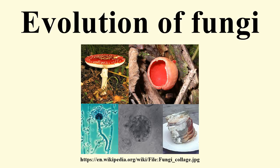For much of the Paleozoic era, the fungi appear to have been aquatic and consisted of organisms similar to the extant chitrids in having flagellum-bearing spores. Phylogenetic analyses suggest that the flagellum was lost early in the evolutionary history of the fungi, and consequently the majority of fungal species lack a flagellum. The evolutionary adaptation from an aquatic to a terrestrial lifestyle necessitated a diversification of ecological strategies for obtaining nutrients, including parasitism, saprotrophism, and the development of mutualistic relationships such as mycorrhiza and lichenization.